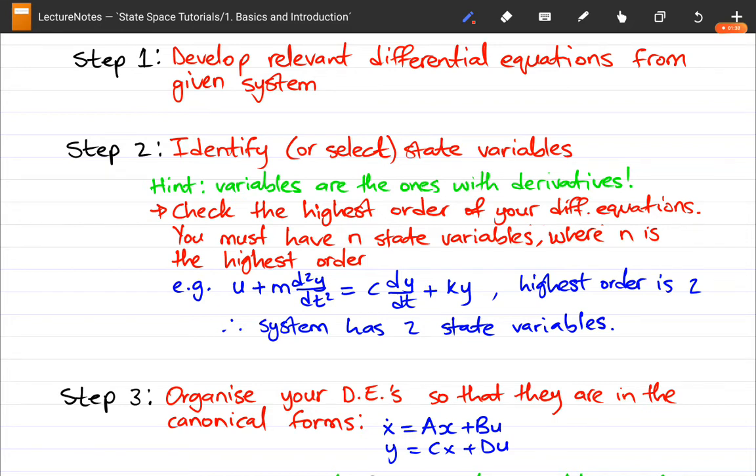and I've taken this one from the previous example, u plus m second derivative of y is equals to c first derivative of y plus ky. It has the highest order of 2 because of this second derivative, which is acceleration. So, you're going to have two state variables. That's something to check out for.